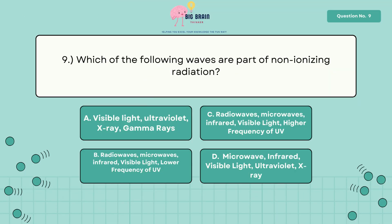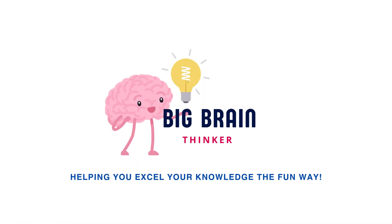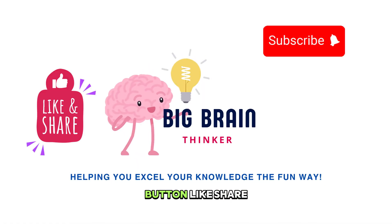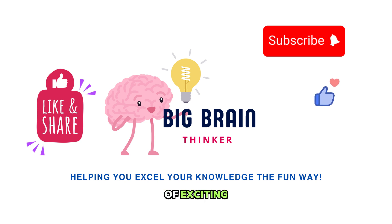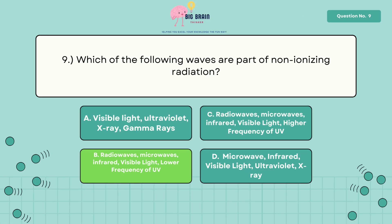Nine, which of the following waves are part of non-ionizing radiation? Be sure to hit that subscribe button, like, share, and stay tuned for part two for a plethora of exciting learning adventures and more brain-boosting content. The answer is letter B: radio waves, microwaves, infrared, visible light, lower frequency of UV waves.